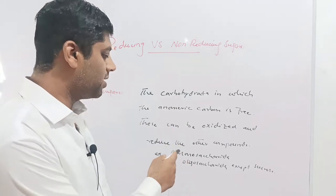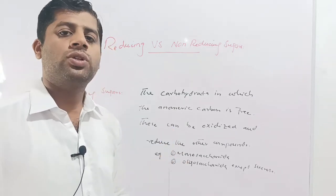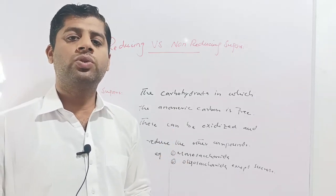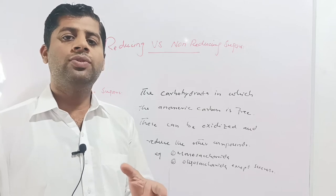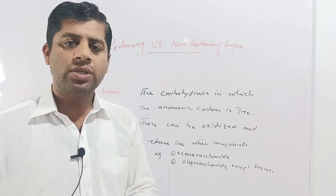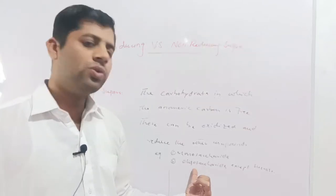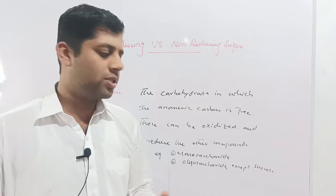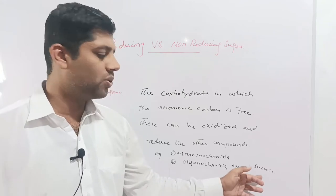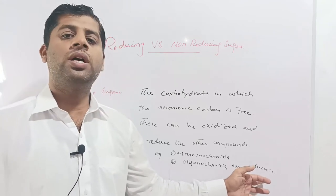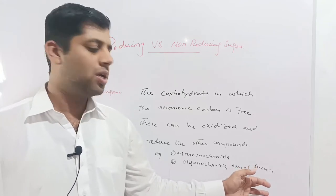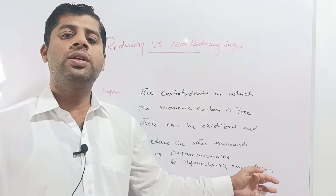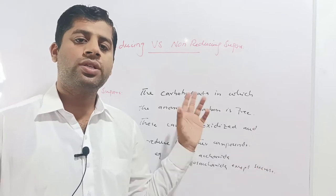Examples of reducing sugars are monosaccharides — all monosaccharides like glucose, galactose, and fructose are reducing sugars. Oligosaccharides and disaccharides also serve as reducing sugars, with the exception of sucrose. Sucrose is a non-reducing sugar, and we will explain its non-reducing nature based on its structure.